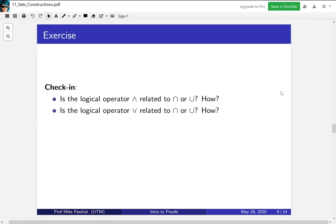Let's do a check-in. Is the logical operator AND related to this U or this upside down U? How? And what about the logical operator OR? This is a common point of confusion for students, but the thing to remember is that the wedge, the AND, is related to the same orientation as the union or intersection.